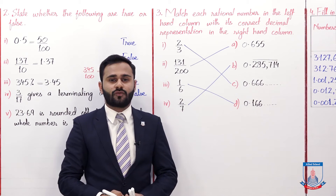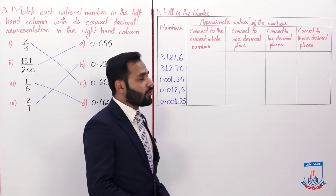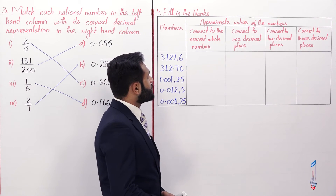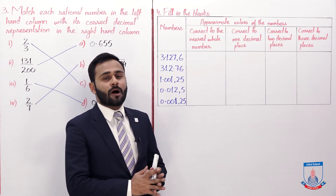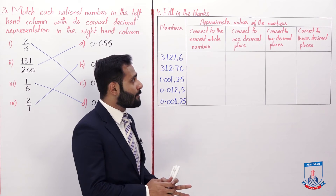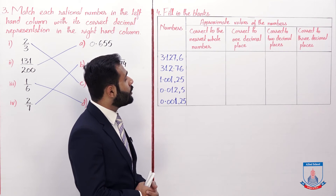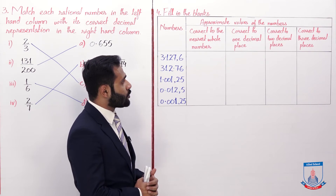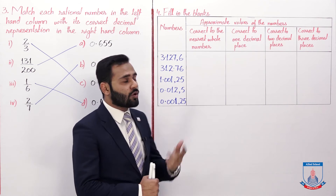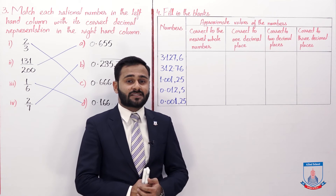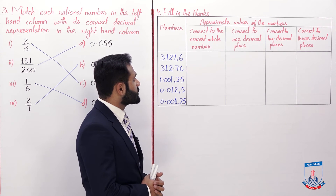I hope Question 3 is also understood. Now Question 4: Fill in the blanks with approximate values. Four columns are given — correct to the nearest whole number, correct to one decimal place, correct to two decimal places, and correct to three decimal places.